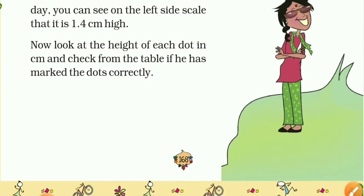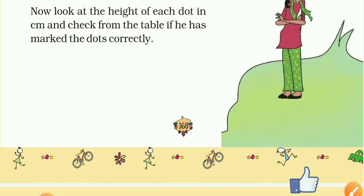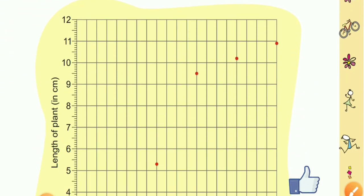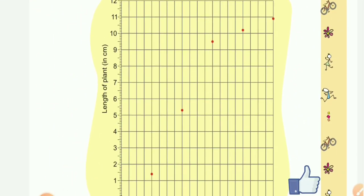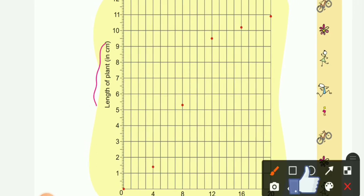Now look at the height of each dot in centimeter and check from the table if he has marked the dots correctly. Here is the graph. On the left side you can see the scale: this is length of plant in centimeter - 1 centimeter, 2, 3, 4, 5 centimeter and so on. Here are days: first 4 days, 8 days, 12 days, 16 days, and last 20 days.